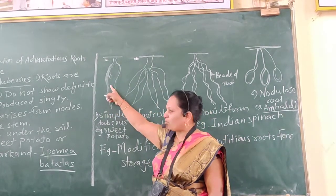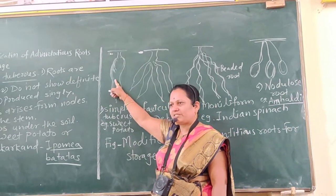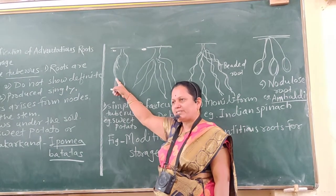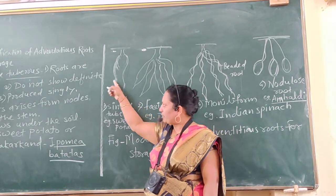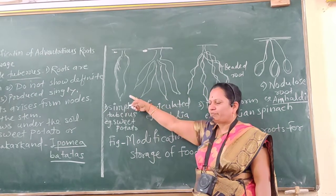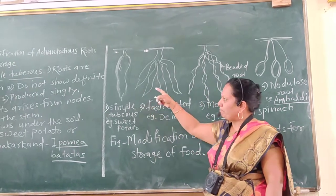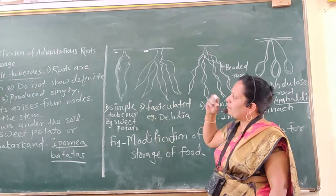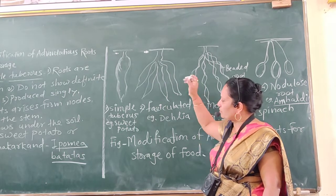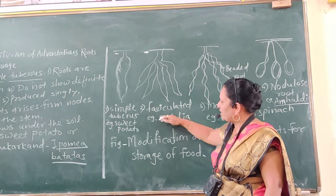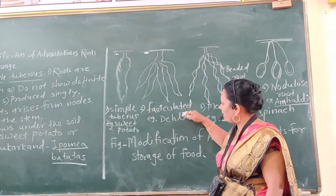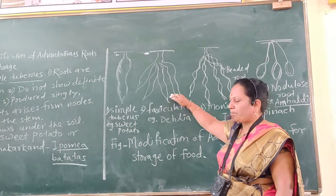Food is stored in the form of starch. Major amount of food is in the form of starch in Ipomoea batatas, that means in the sweet potato. Second type of modification of adventitious root for food storage is fasciculated roots.